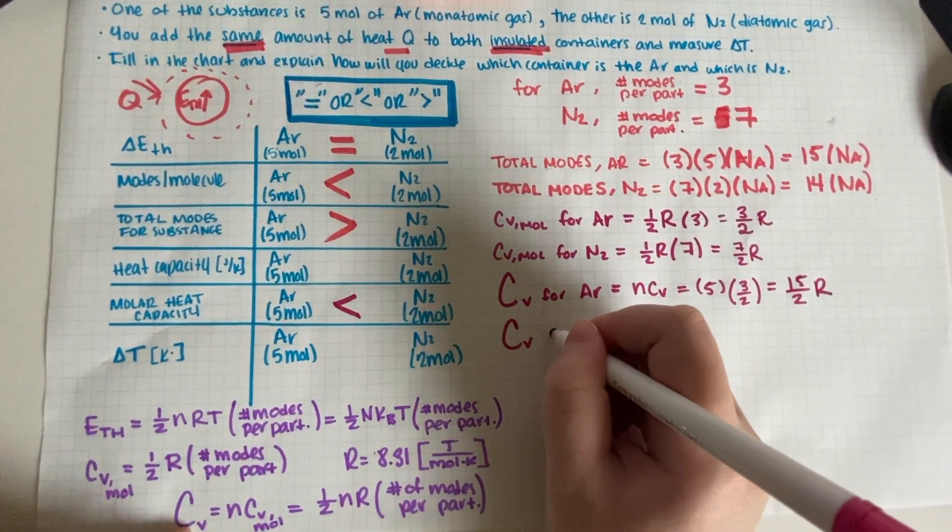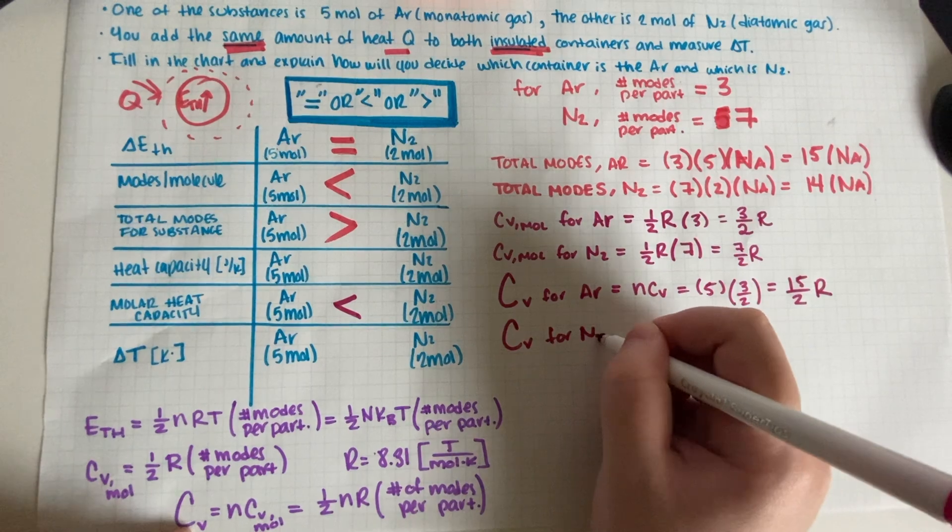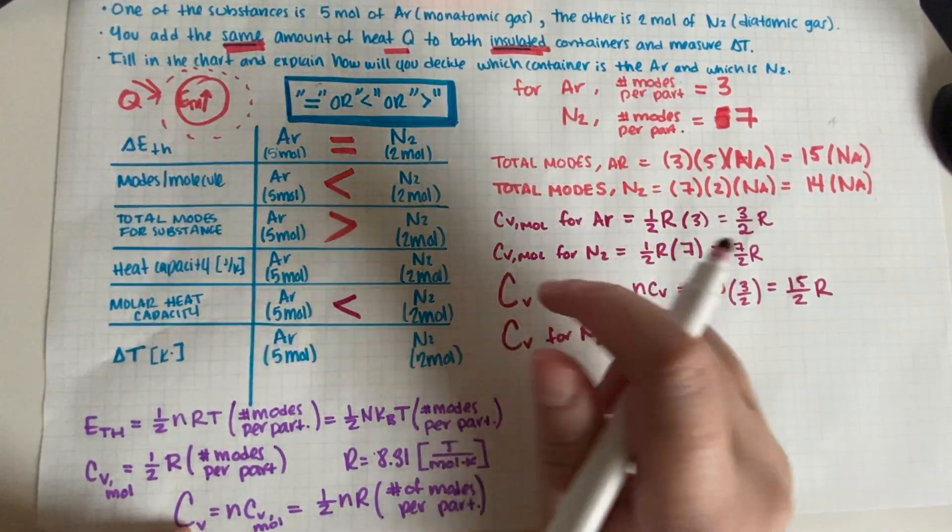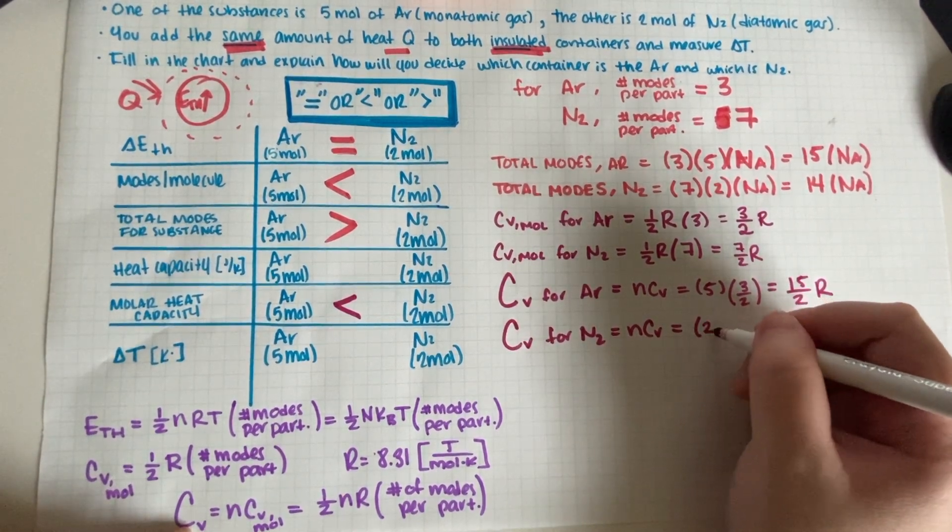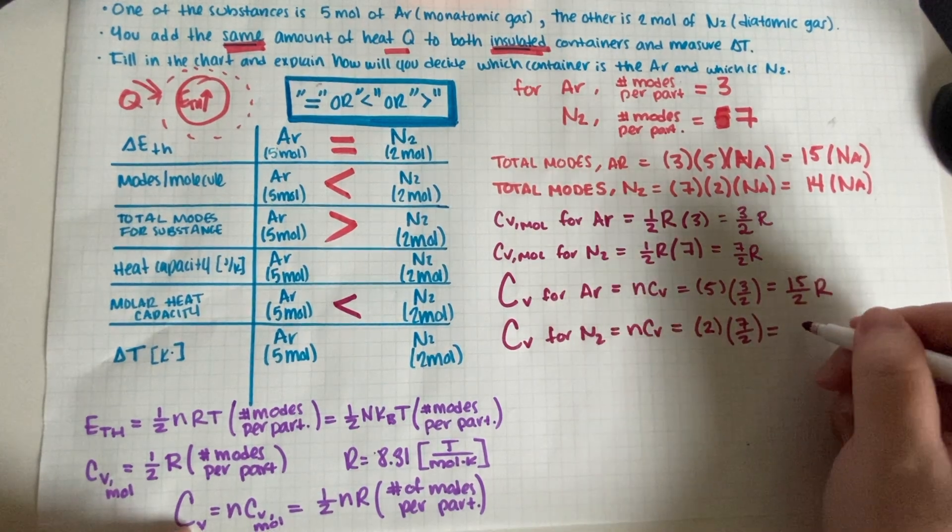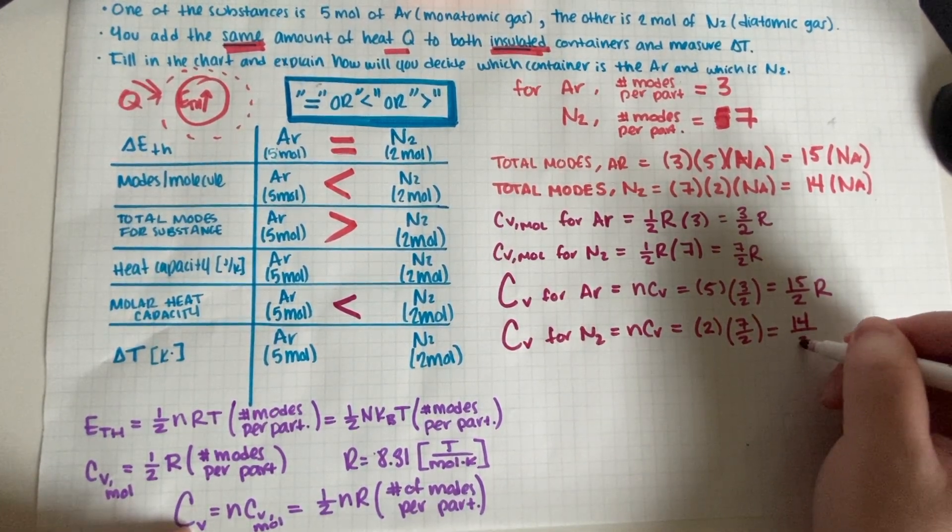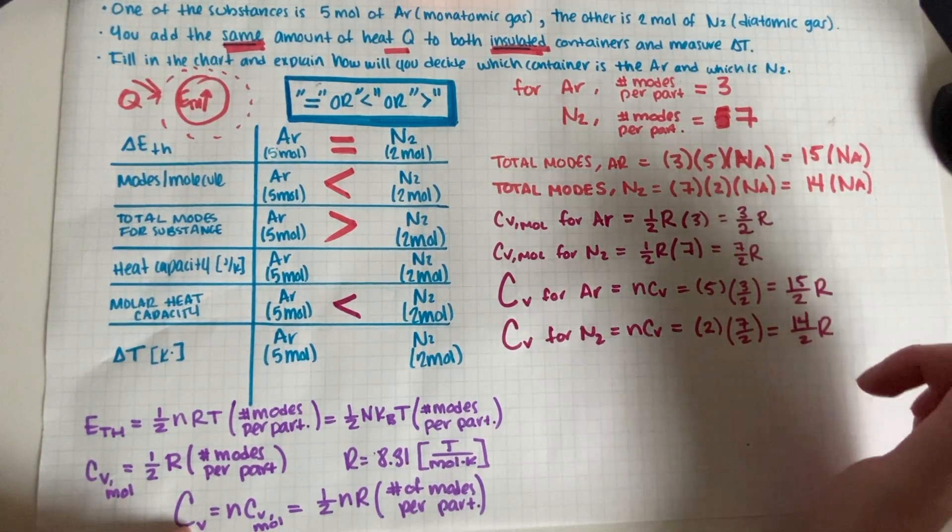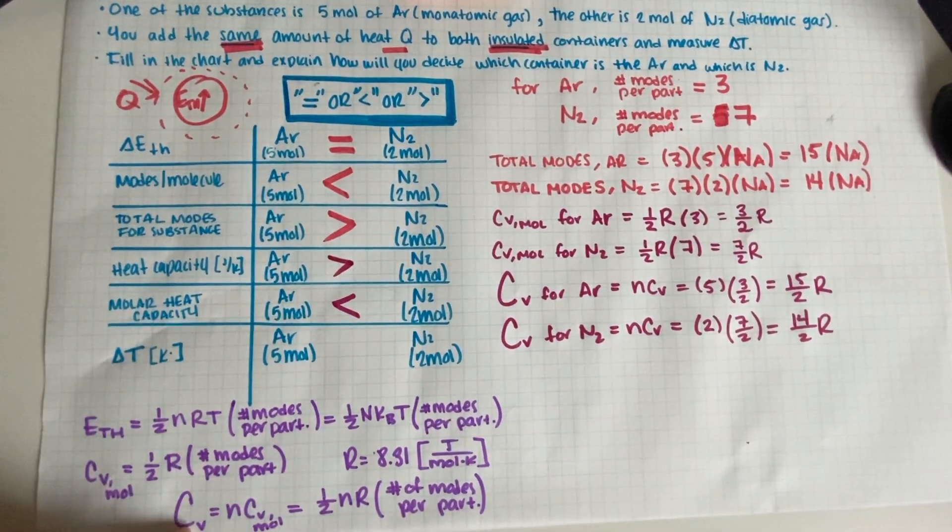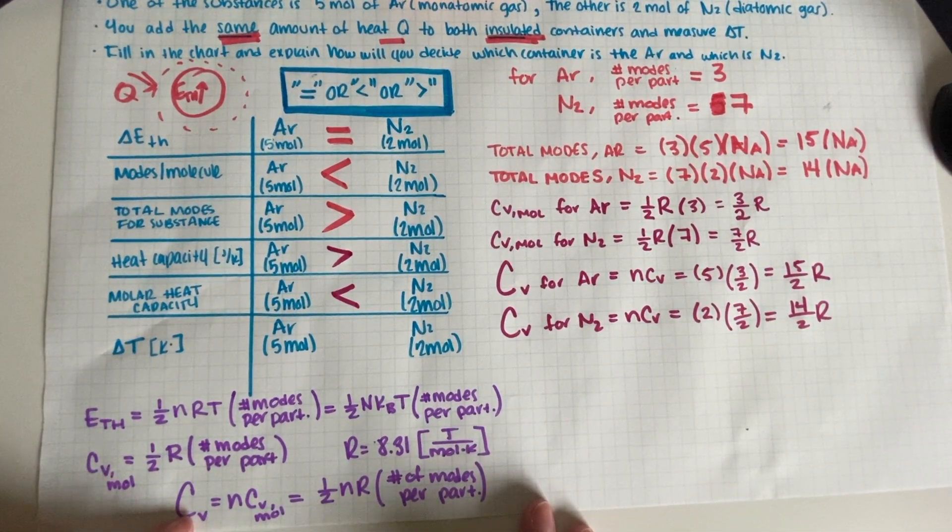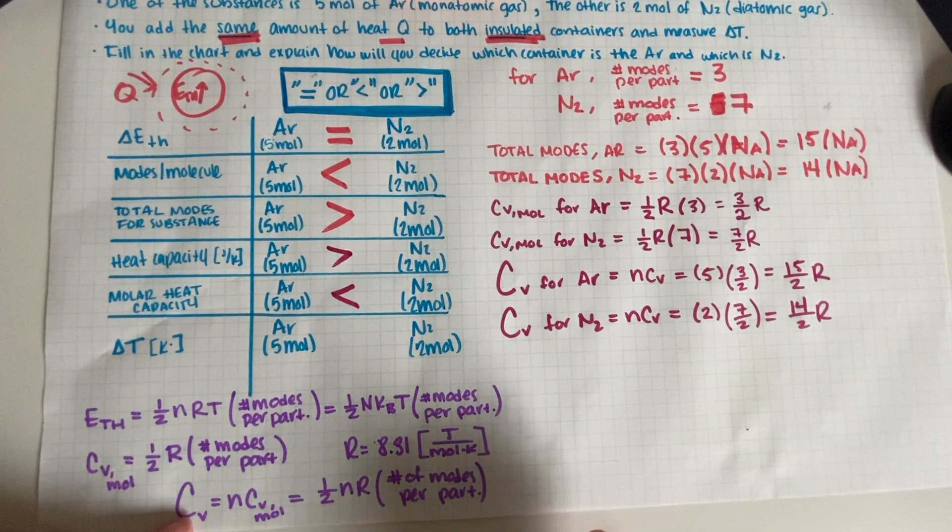Big Cv for nitrogen is n times cv, but for nitrogen n is only two moles, so we do two times seven halves, so this is 14 halves of r. And again, 15 is greater than 14, so this is actually this way around. And again, if instead of seven you use five, then that answer is even more pronounced.